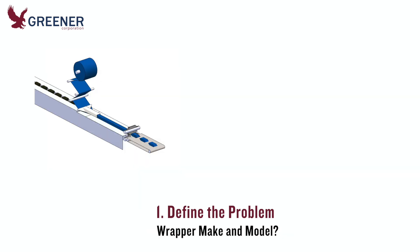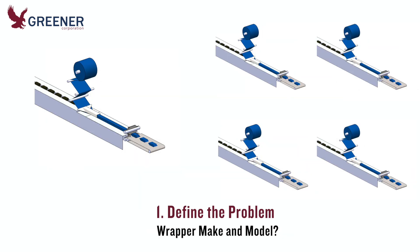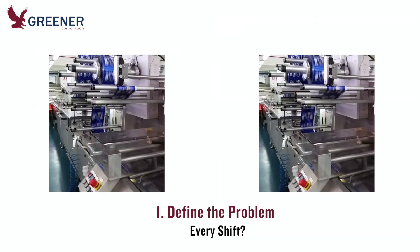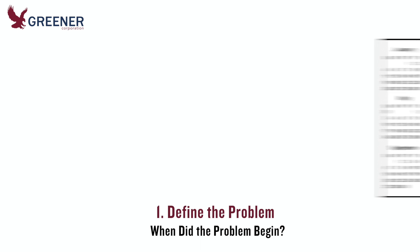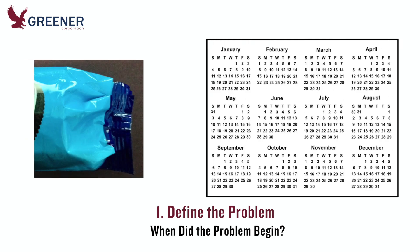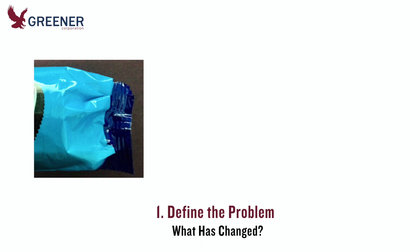Is the problem isolated to one wrapper or does it occur on multiple machines? What is the make and model of each wrapper? Are results the same on every shift? Does the problem occur at more than one plant location?